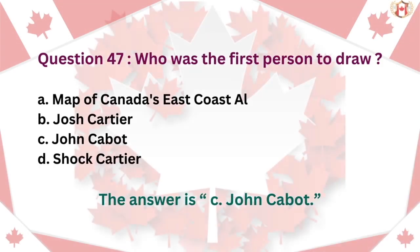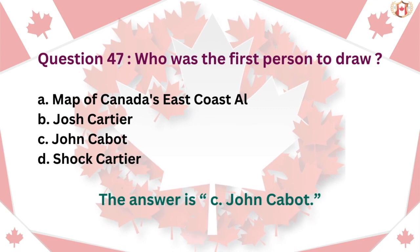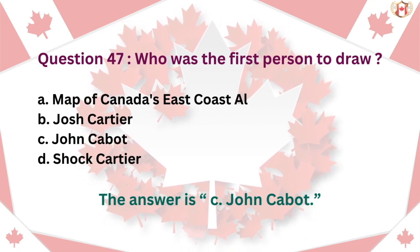Question 47: Who was the first person to draw a map of Canada's East Coast? A. Al, B. Josh Cartier, C. John Cabot, D. Jacques Cartier. The answer is C. John Cabot.